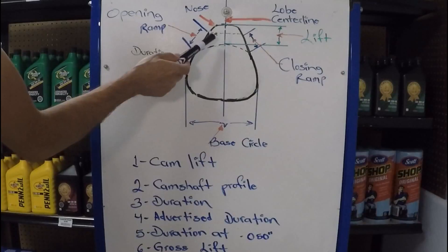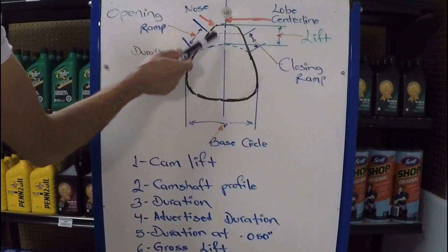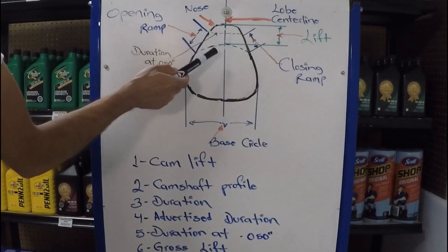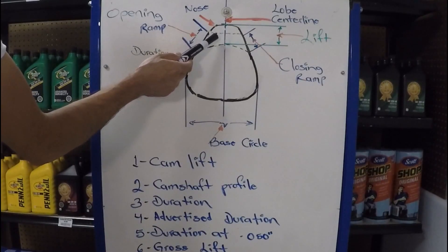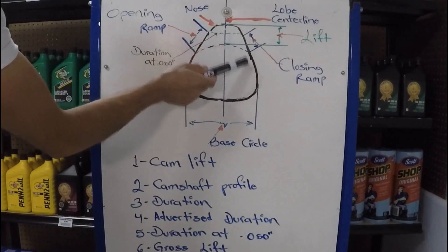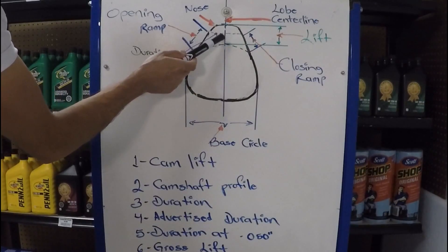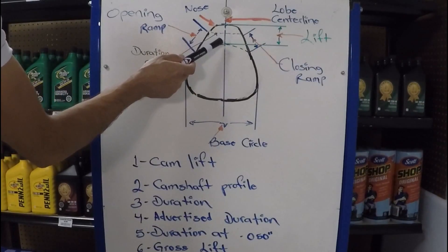For engines that have rocker arms, the final ratio is going to be multiplied by whatever rocker arms you're using. And because of that, the overall lift on an engine that uses rocker arms is not going to be the same as the lift of the camshaft itself. I'll explain that in a little bit more detail.